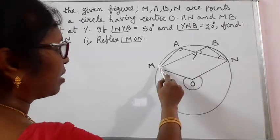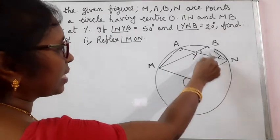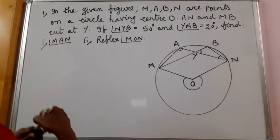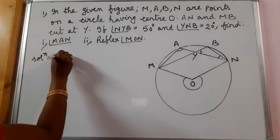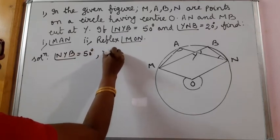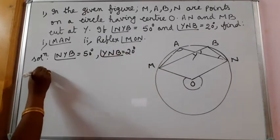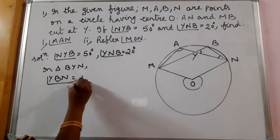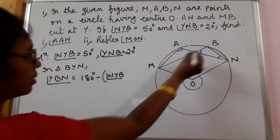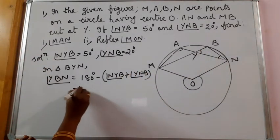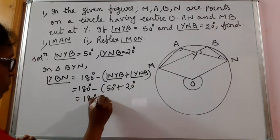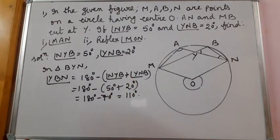In order to find angle MAN, we can use angle MBN, that is angle YBN. In triangle YBN, we know two angles, so we can find angle YBN. Angle NYB is given as 50 degrees and angle YNB is given as 20 degrees. So in triangle BYN, angle YBN equals 180 degrees minus angle NYB plus angle YNB, that is 180 minus 70 degrees, which gives 110 degrees.